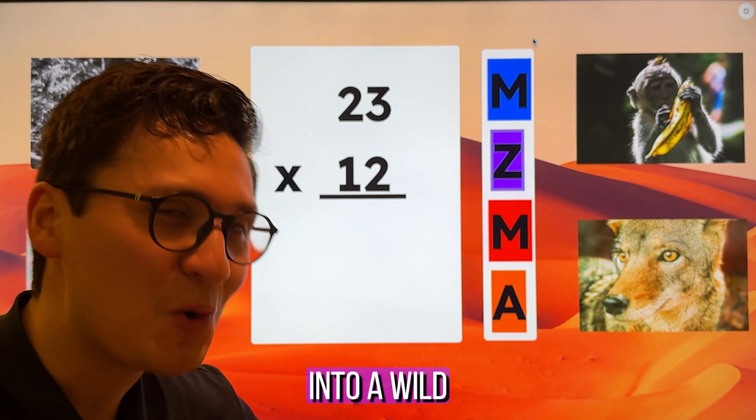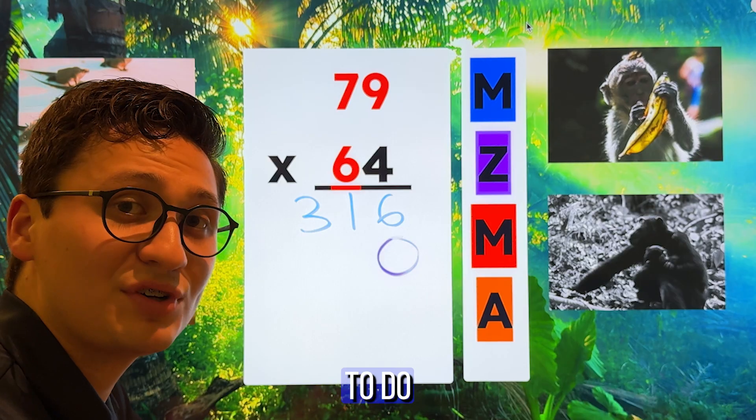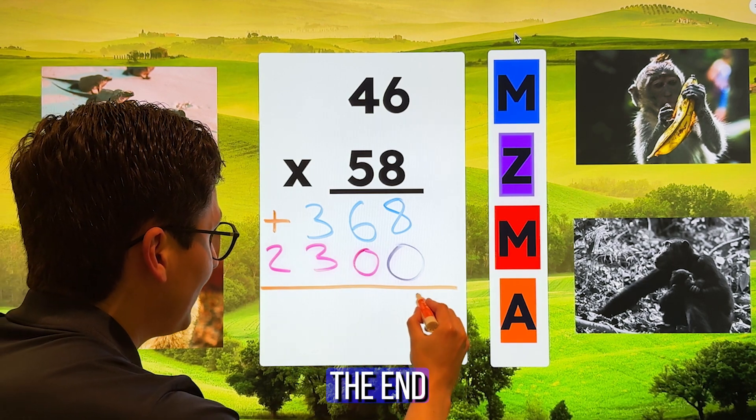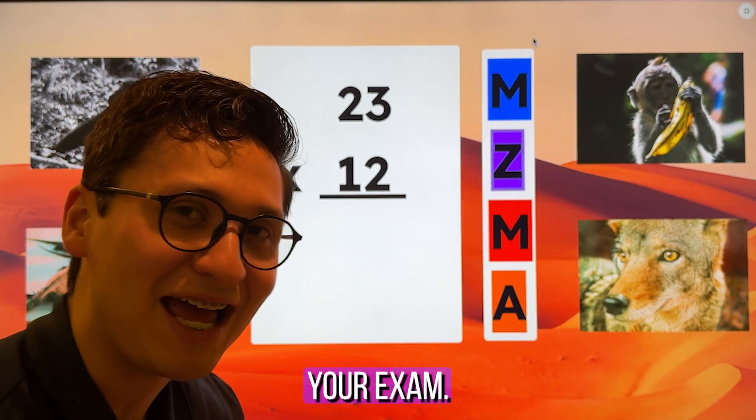Today we're diving into a wild new strategy to multiply two-digit numbers. We're going to do five problems, each getting more and more difficult. So stick around until the end so that you can make sure that you're ready to ace your exam. Let's get started.